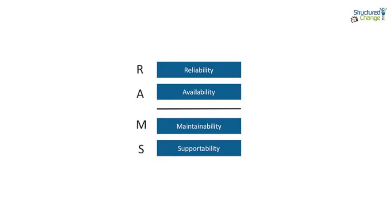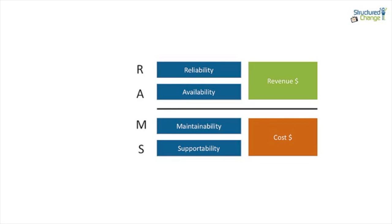Taking a look at this diagram here, RAMS is typically expressed like this. You can see there's a horizontal line between availability and maintainability — we'll come to this in a moment. If you take a look at this diagram, you can see that above the line we're looking at revenue, and below the line we're looking at cost. This is important to realize because it creates great tension between the two, as both above the line and below the line need to equal out in order to generate that equilibrium of value for stakeholders.